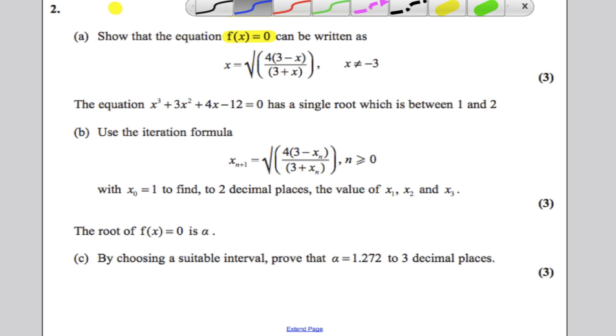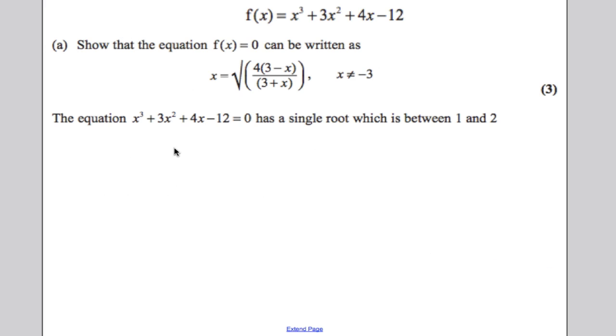So let's go straight ahead and do that. f(x) equals 0, so we would have x cubed plus 3x squared plus 4x subtract 12 is equal to 0. Now just looking at what we need to get to here, we need to get to a point where we have this on the other side, so we would need a 3 plus x on the other side.